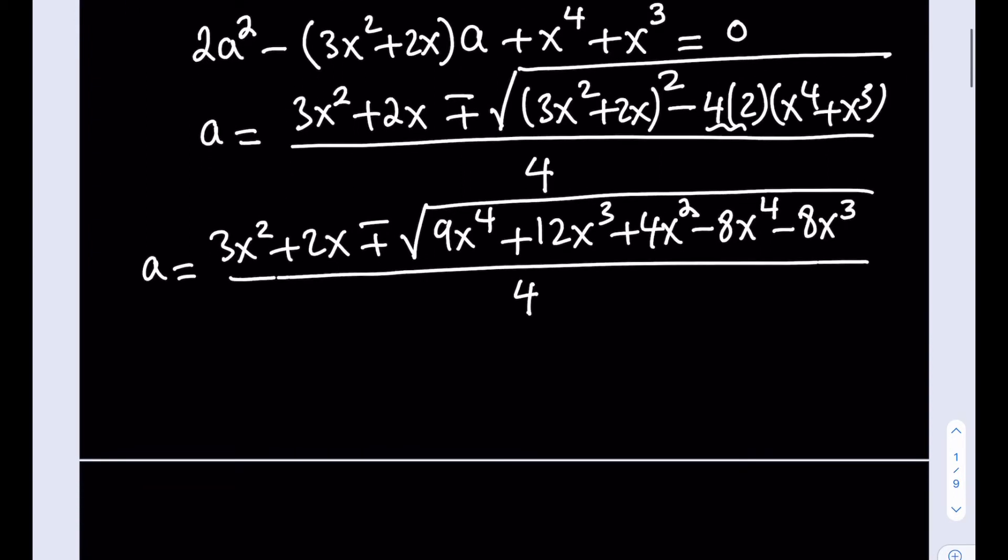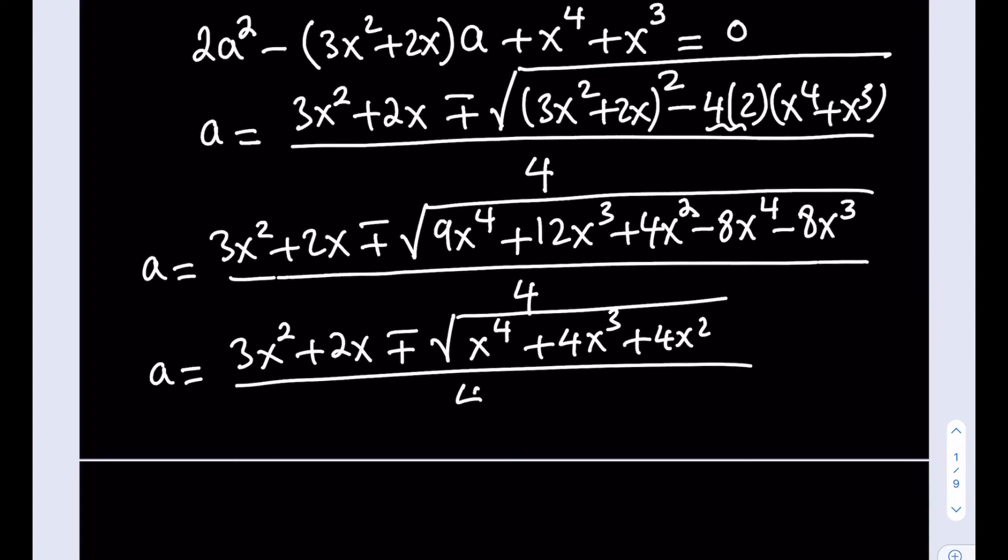Now what are we going to do next? We're going to simplify still inside the radical. 3x squared plus 2x plus minus. What do you have inside the radical? 9x to the fourth minus 8x to the fourth. That gives me x to the fourth power. I have 12x cubed minus 8x cubed, which is 4x cubed. And I have 4x squared. That's a much nicer expression, obviously. And all of that is divided by 4.